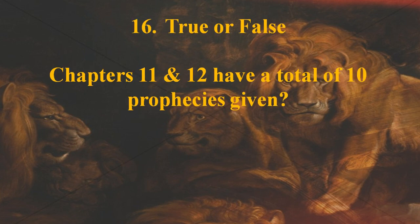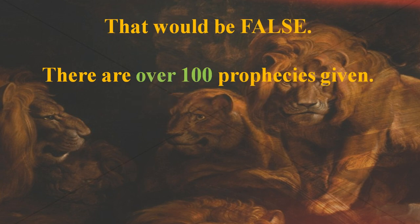Number sixteen: true or false — chapters 11 and 12 have a total of 10 prophecies given. The answer is false. There are actually over 100 prophecies.